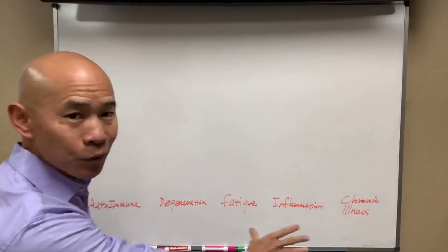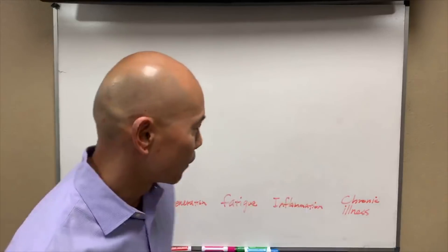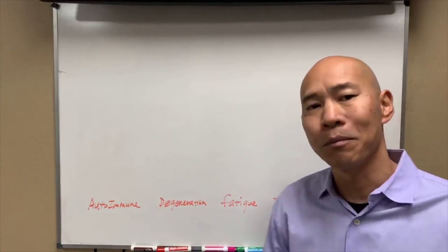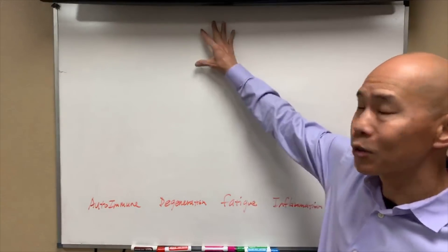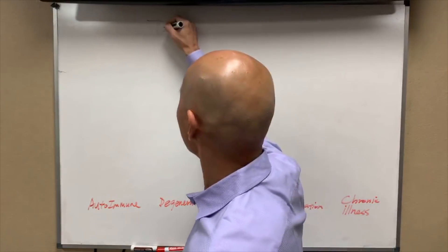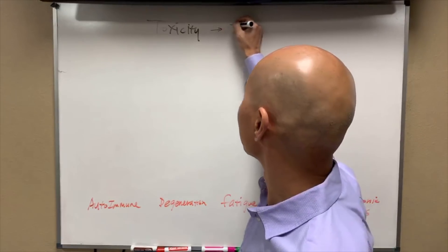These are the symptoms or diseases that are manifested, but we don't want to treat the symptom — we want to address the root cause by understanding physiology. There are pharmaceutical drugs that will supposedly treat the symptom but not address the root cause. That's a downstream effect. We want to go upstream to find out how things come about. So today's show is on toxicity and how that affects immune function.